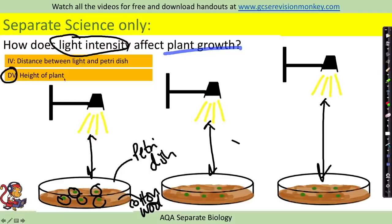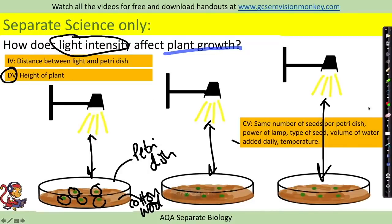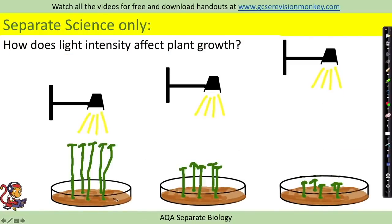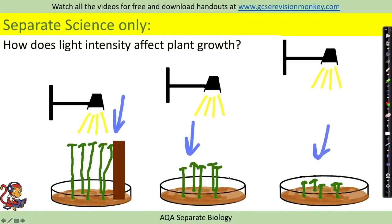The dependent variable is the height of the plant. Control variables include: the same number of seeds per petri dish, the power of the lamp, the type of seed, the volume of water added daily, and the temperature. You may measure the rate of growth by measuring the height of the plant every day, or leave it for a set number of days and measure afterwards. To measure height, place your ruler touching the cotton wool or soil and hold the plant gently against the ruler to get an accurate reading. Measure the height of each seedling in each dish and calculate an average height per light intensity, then record this in a table.